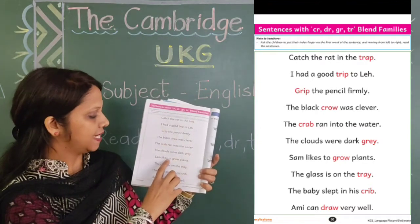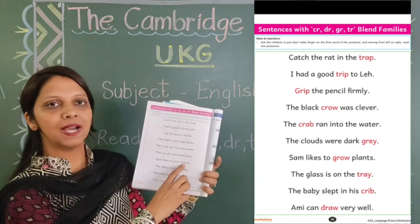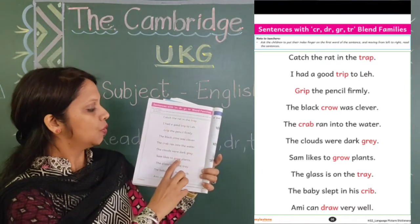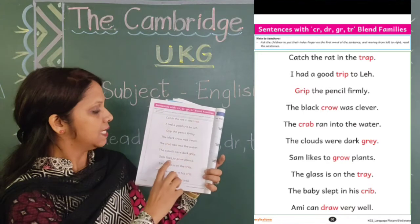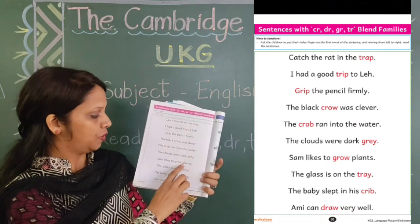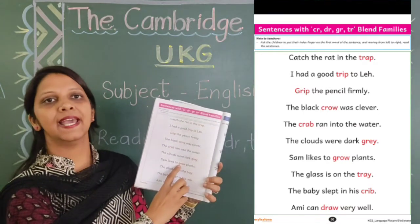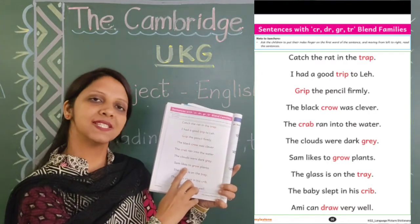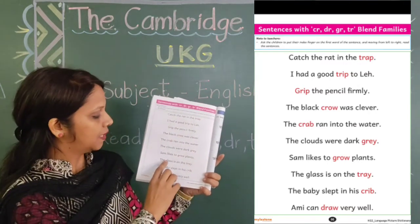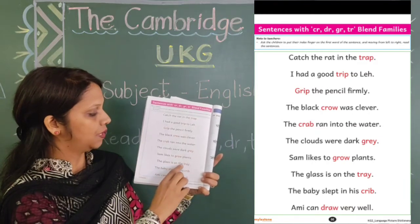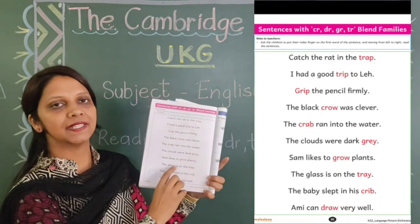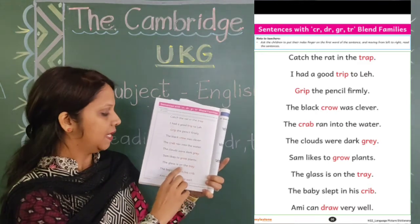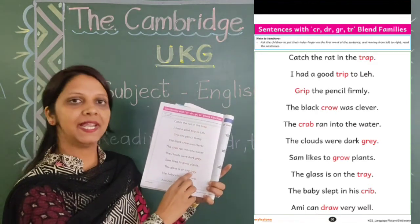Sam likes to grow plants. Sam likes to grow plants. Sam ko pohde ugaana pasand hai. The glass is on the tray. The glass is on the tray. Gilaas tray par hai.